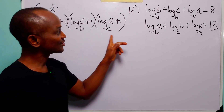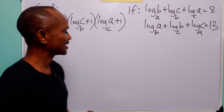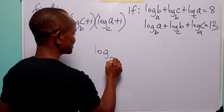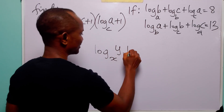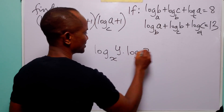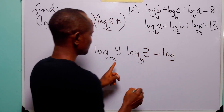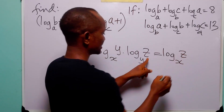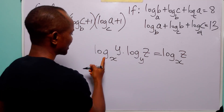Hello and welcome. To solve this exercise we need to know that log to base x of y, multiplied by log to base y of z, is equal to log to base x of z. Now let us prove this.